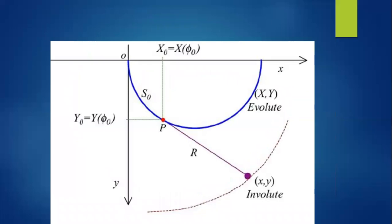Similarly, from another graph: we have a curve and a dotted curve. A tangent line is tangent to the solid curve at point P, and that same line is normal to the dotted curve. Due to this tangent line, the solid curve becomes the evolute of the dotted curve, and the dotted curve becomes the involute of the solid curve.